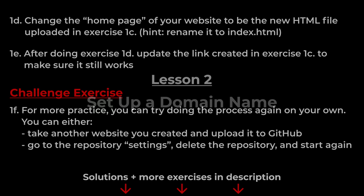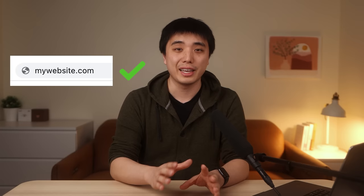In this section, we're going to learn how to set up a domain name for our website, like mywebsite.com. This is going to make it a lot easier for people to access our website, because they can type the domain name into the browser instead of that URL that GitHub Pages gives us. There are two steps to this process: the first step is to get a domain name, and the second step is to link our domain name to GitHub Pages. Let's start with getting a domain name.